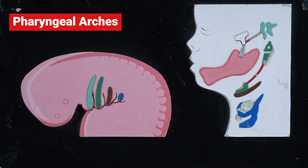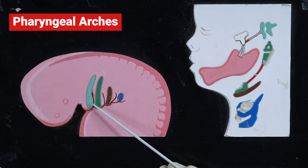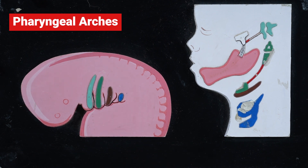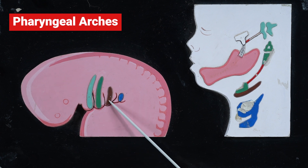If the examiner asks about the arterial derivatives, the artery of the first arch is represented by the maxillary artery — the majority of the first arch artery disappears, leaving only the maxillary artery. In the case of the second arch, it is represented by the stapedial and caroticotympanic artery. The artery of the third arch is the common carotid artery.